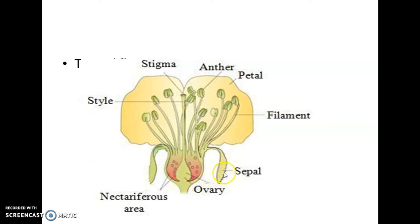See children, this is sepal or calyx, these are petals or corolla, and here you can see anther, androecium, the male reproductive structure, and this is pistil, gynoecium, the female reproductive structure. So this is the typical flower.